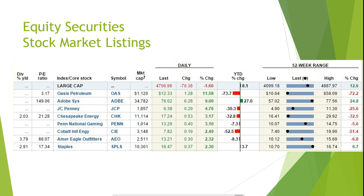The column that reads MKT CAP is the market cap of Chesapeake Energy's common stock. The market cap is listed in millions to simplify the table — Chesapeake Energy's market cap is $11,114,000,000. This means that the market value of all of Chesapeake Energy's outstanding shares is worth $11,114,000,000.